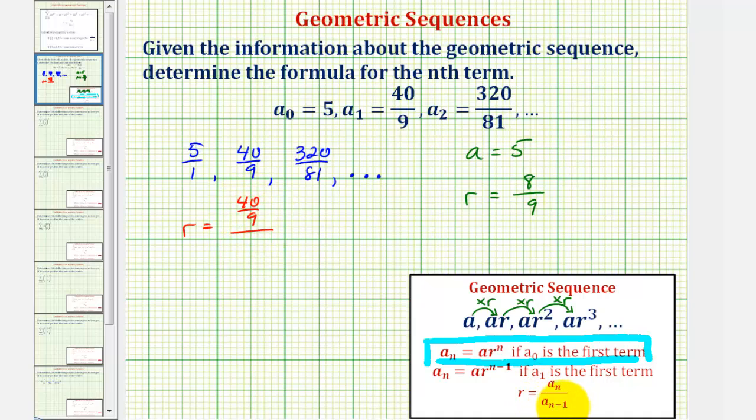Divided by a sub n minus one, which would be the previous term of five. And this is equivalent to 40 ninths. Instead of dividing by five, we'd multiply by the reciprocal of one fifth.